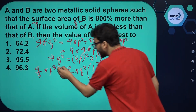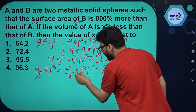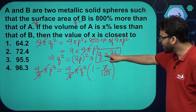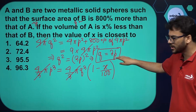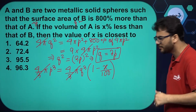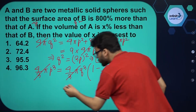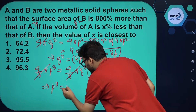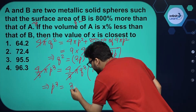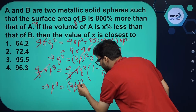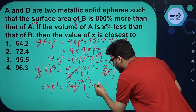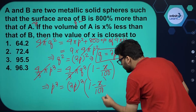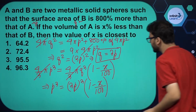We can cancel out (4π/3) from both sides. We already have the relation Q = 3P, so we substitute Q = 3P. This gives us P³ = (3P)³ × (1 - x/100).